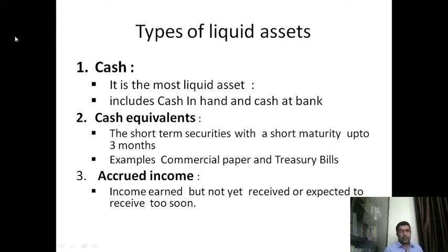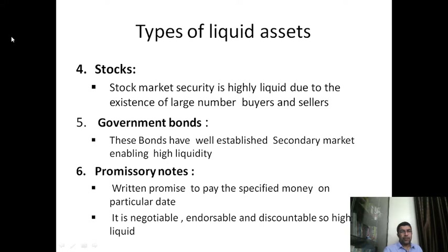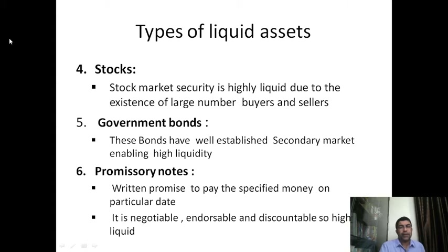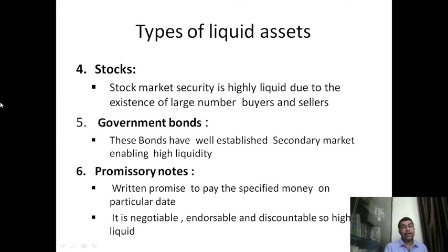Commercial paper and treasury bills are cash equivalents. Accrued income is income earned but not yet received — for example, interest receivable. Stocks and stock market securities are highly liquid due to the existence of a large number of buyers and sellers. You can sell stock market securities any time because of the availability of key players in the market, including day traders, who play an important role in providing a ready market.